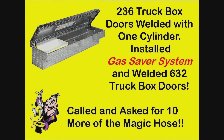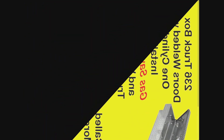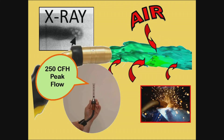That gas blast at the weld start does more than waste gas. The turbulent gas stream pulls in moisture-laden air, making inferior weld starts with excess spatter.